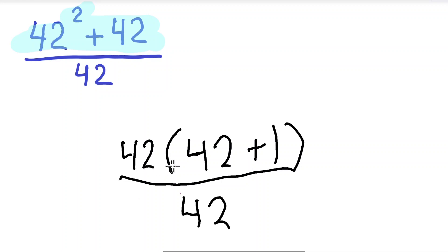Because this 42 is being divided and this 42 is being multiplied. So imagine we just cut off this part—this is 42 times 42 plus 1.